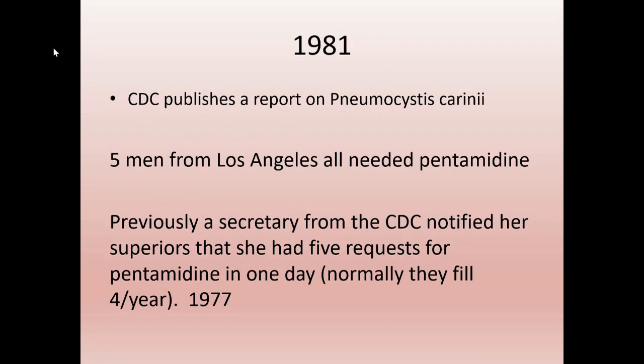In 1981, the CDC ran a story because five men in Los Angeles all needed pentamidine. One thing the CDC kept out of their publication was that the five men were all young and gay. A secretary had actually flagged a concern when she got five requests for pentamidine in one day in 1977 — the average is four per year. The CDC did nothing. Around the same era, about a dozen people took ill in Philadelphia, and huge CDC funds were freed to study it. The difference was they were straight, wealthy, white people.